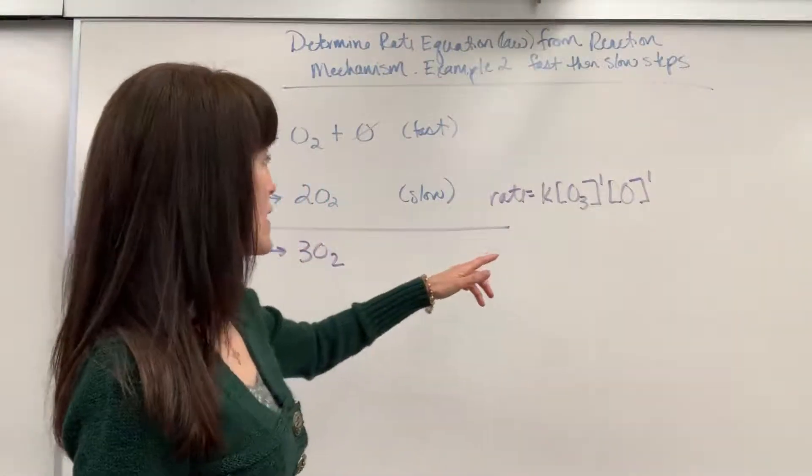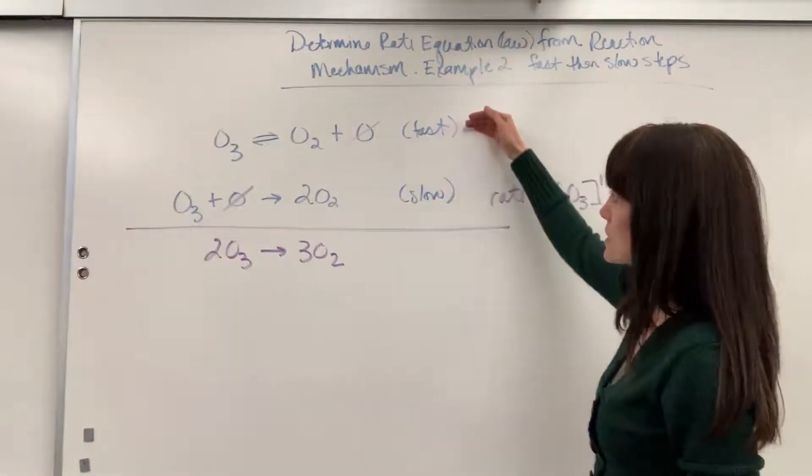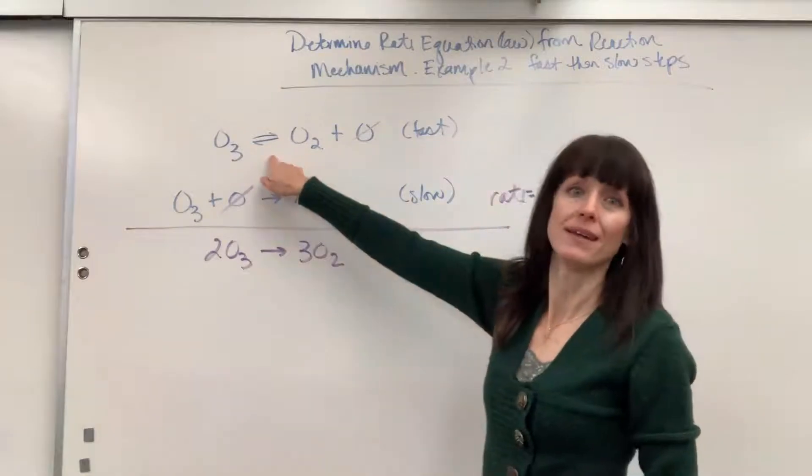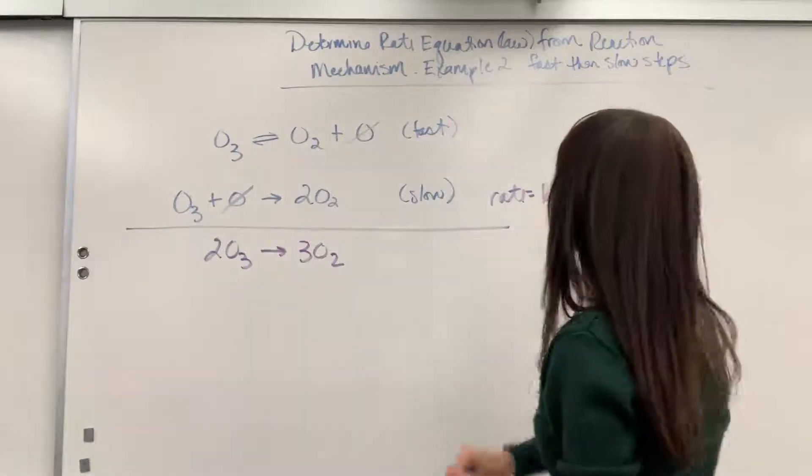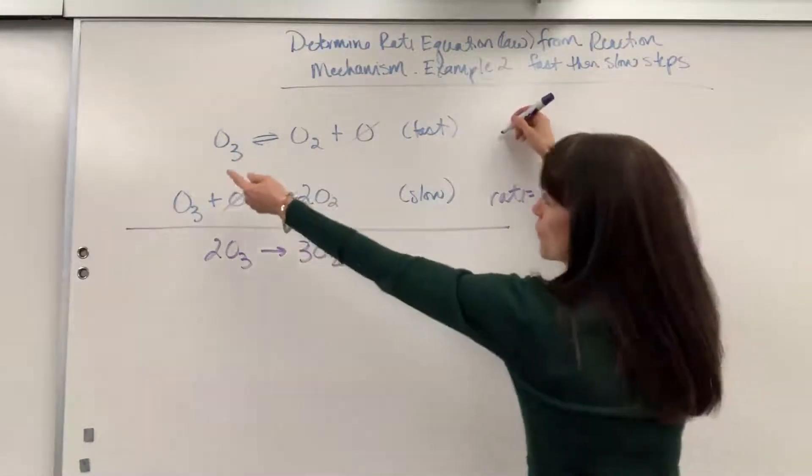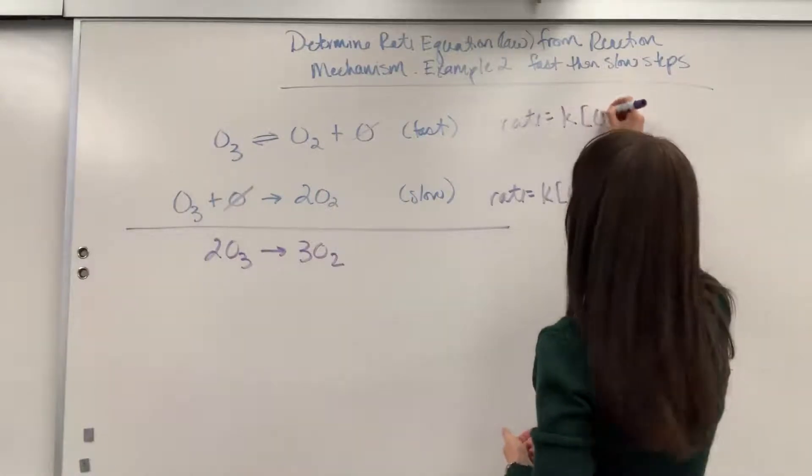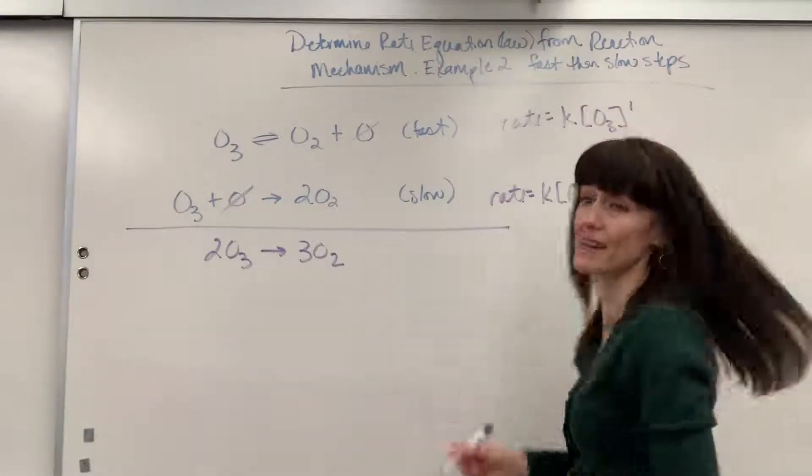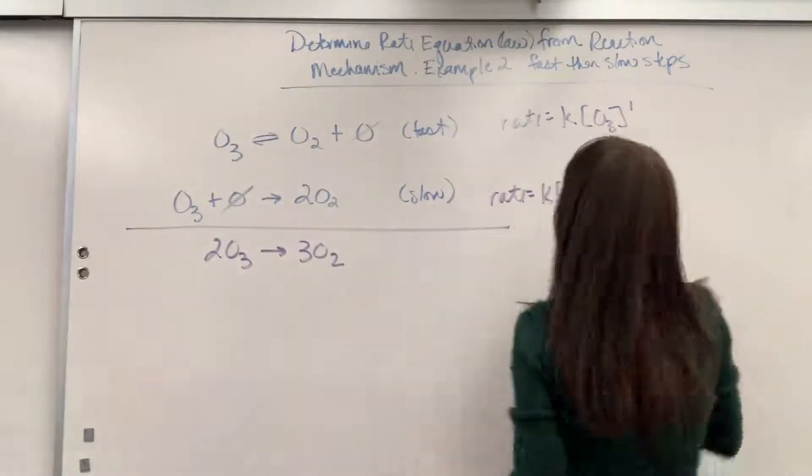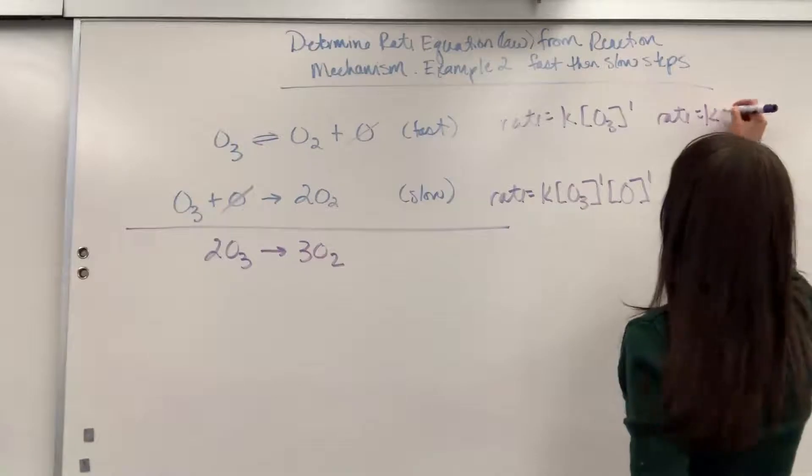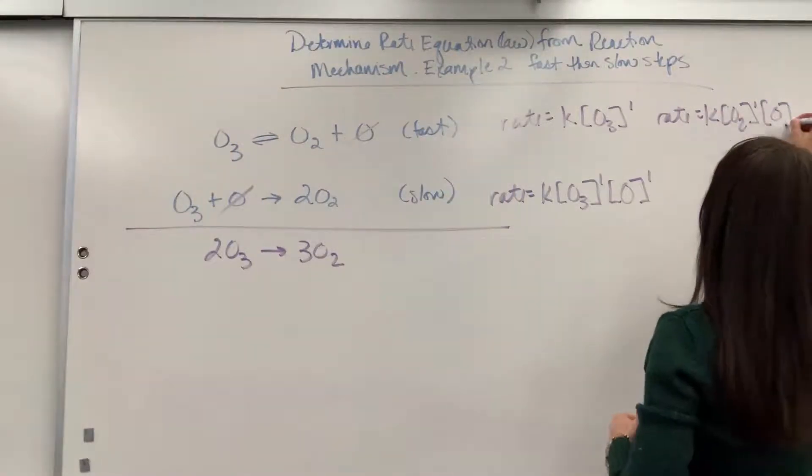So let's go ahead and look at our fast step. Okay, now you'll recall if the fast step is before the slow step is going to be in equilibrium, it will reverse. So I can write both rate laws for this. We are going to have the forward rate law, rate equals K times the concentration of O3 to the first order. And we're going to have the reverse rate law, rate equals K times the concentration of O2 to the first order times the concentration of O to the first order.